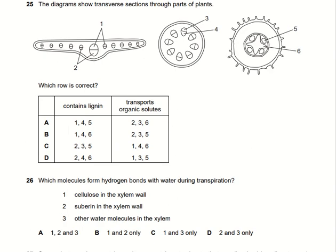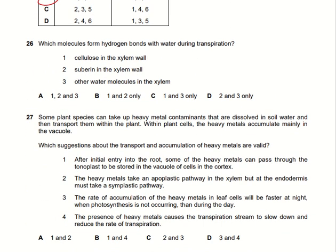A diagram shows a transverse section through parts of a plant, typically showing xylem and phloem cells. Which row is correct — contains lignin? Xylem contains lignin, and phloem transports organic solutes. We identify which points show xylem and which show phloem vessels. Points 1, 4, and 6 show xylem cells, and points 2, 3, and 5 show phloem cells. Option B is the right answer.